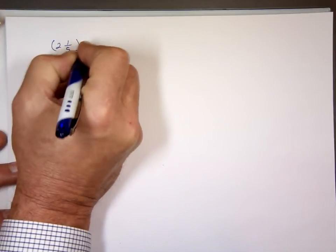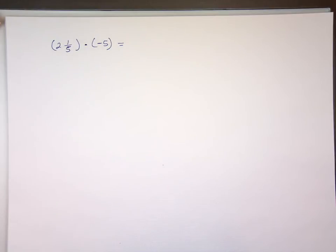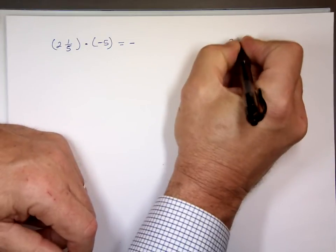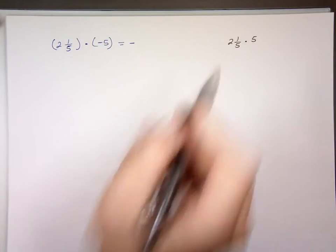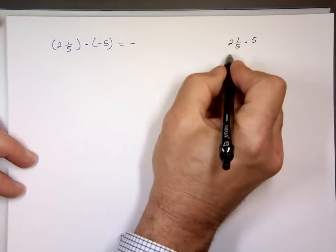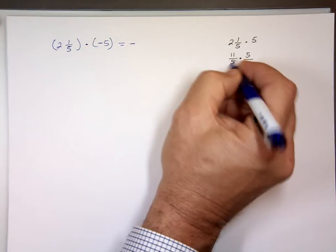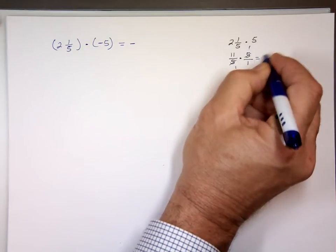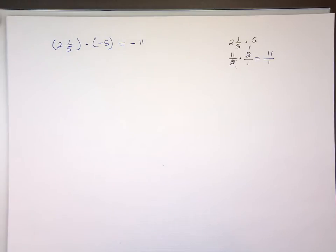What is two and one fifth times negative five? This will be positive or negative? Negative — different signs. Let's go to the side and multiply these two. Two and one fifth times five: change to improper fraction — five times two is ten, plus one is eleven over five. Times five over one. Notice the fives cancel. Eleven times one is eleven, one times one is one. So the answer is negative eleven.